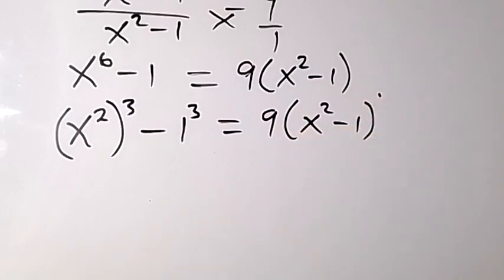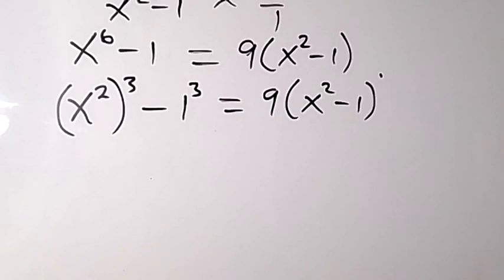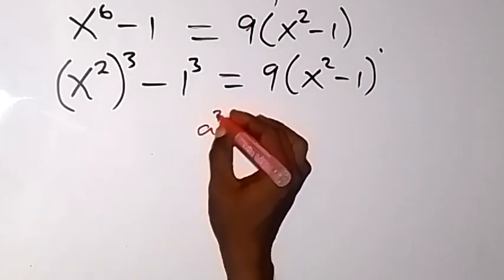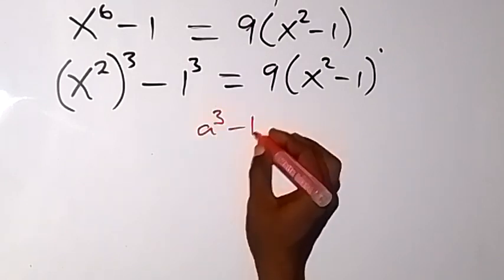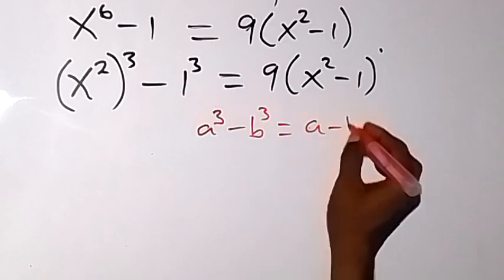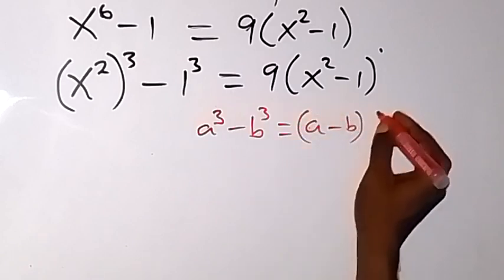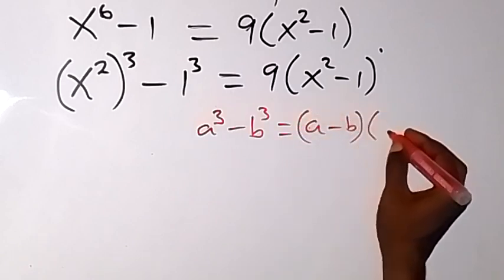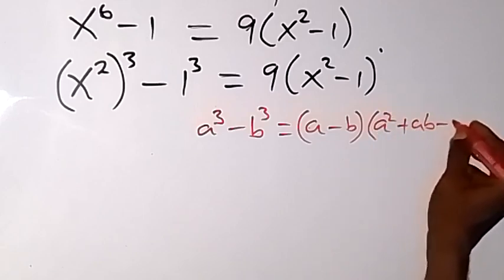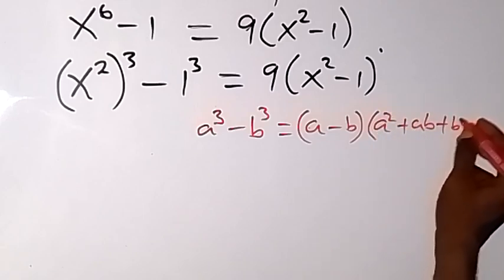And from here, we can use an identity — the difference of two cubes. That is, when we have a cubed minus b cubed, this gives us a minus b multiplied by a squared plus ab plus b squared.